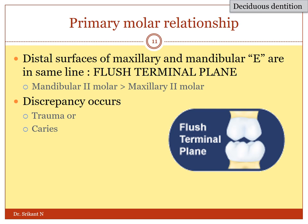The last primary molar — that is the E, the second deciduous molar — contacts with each other in such a way that the distal portion is in line with each other. This kind of occlusion is called a flush terminal plane, wherein the mandibular second molar, which is slightly bigger than the maxillary second molar, compensates for the size differences of the mandibular teeth, giving rise to a straight flush terminal plane.